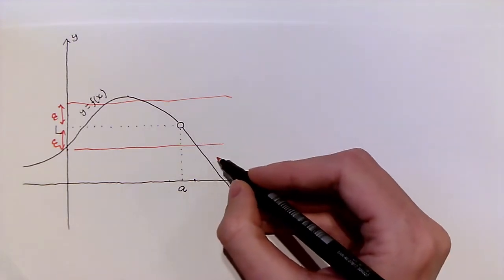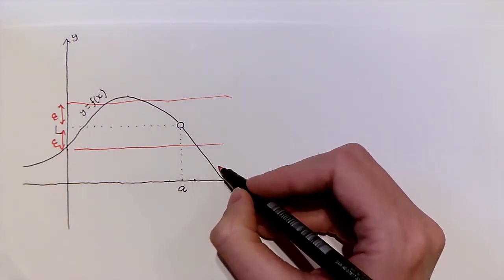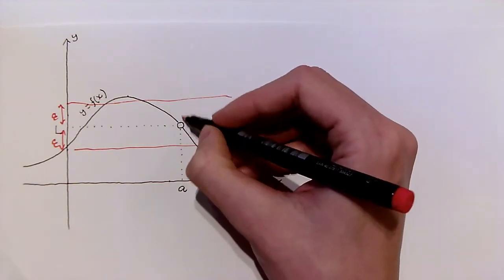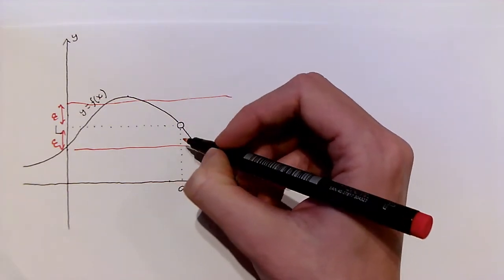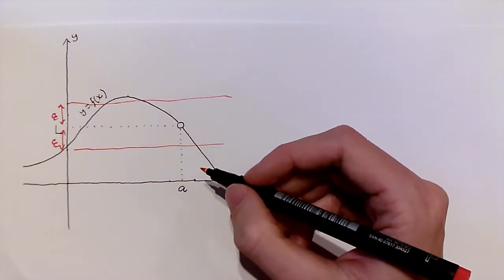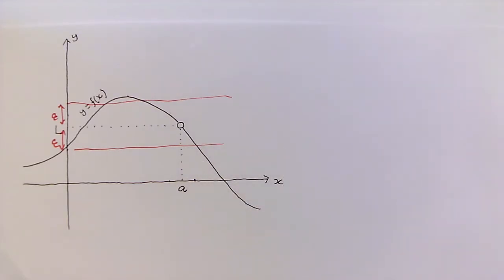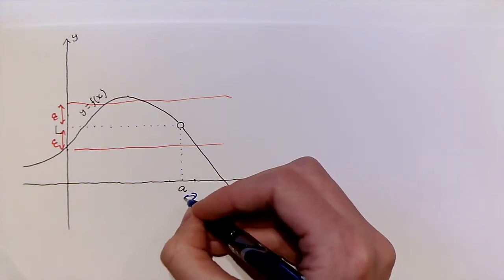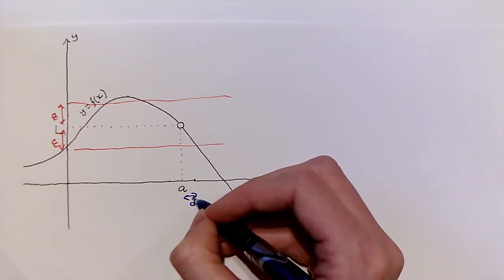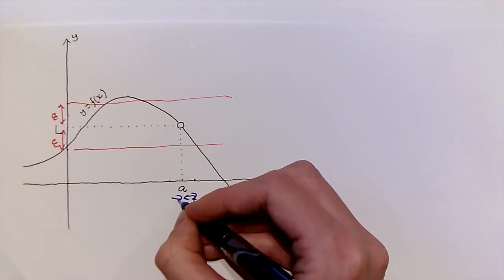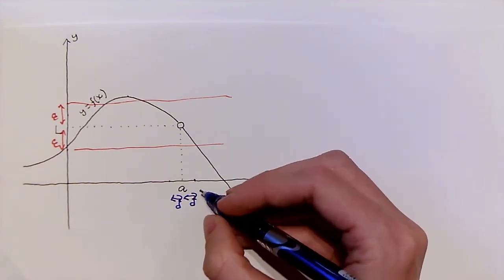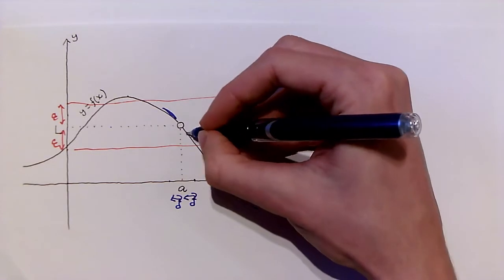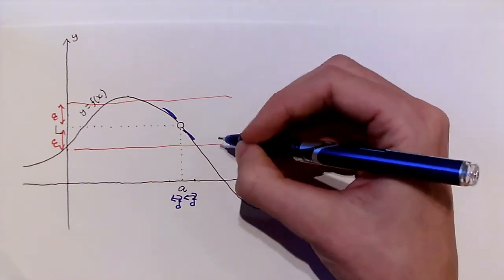And we can extend this out to give a strip of width 2 epsilon, centered around this number l. Note that the function sometimes goes outside this strip, like over here, and sometimes it lies within this strip, like over here. Now for the function to have a limit at a, there needs to be some positive number delta, such that for x values within a distance delta of a, but not equal to a itself,